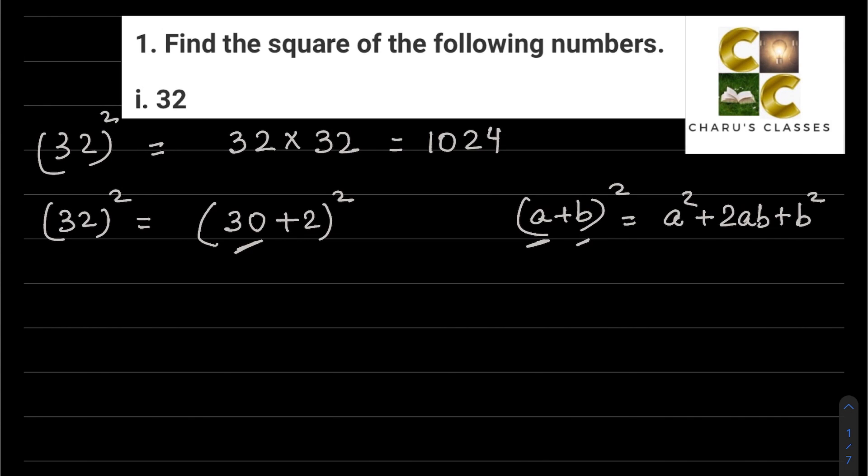a plus b whole square equals a squared plus 2ab plus b squared. Here a is the first number, that is 30, and b is 2. So 30 plus 2 whole squared equals a squared, that is 30 squared, plus 2 into a into b, so plus 2 into 30 into 2, plus b squared, which is 2 squared. 30 squared means 30 into 30, that is 900, plus 2 into 30, that is 60, 60 into 2, that is 120.